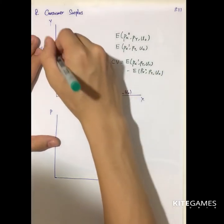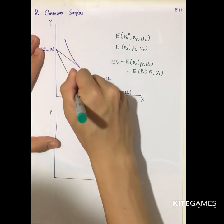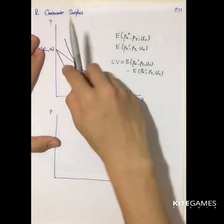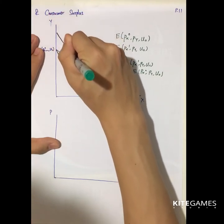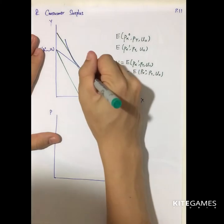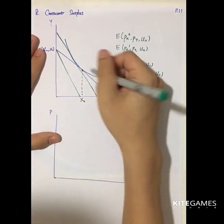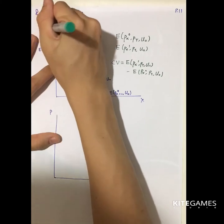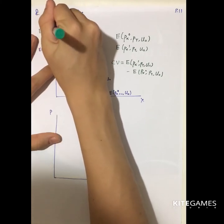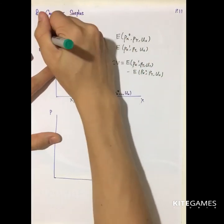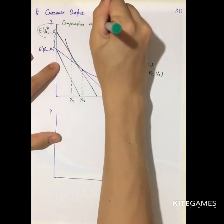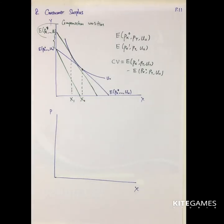If the price of X increases, the budget line will rotate inward. If you want to stay at the original utility level, you need to be compensated by a certain amount — a parallel shift. So X0 is the original quantity and X1 is the new level. The increase in expenditure shown here, this vertical distance, is the compensating variation — the amount you have to be compensated to remain at the same utility level.